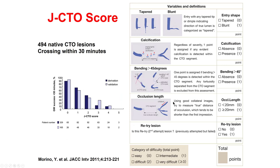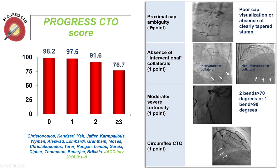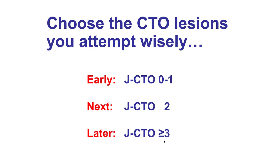Many scores have been developed that take anatomic characteristics into consideration and translate them into a predicted chance of CTO crossing within 30 minutes or overall success. The most commonly used is the JCTO (Japan CTO) score, which has five parameters: tapered proximal cap, calcium, bending more than 45 degrees inside the occlusion, more than 20 mm occlusion length, and previous failure to cross the CTO. Another score is the Progress CTO score, with four parameters: proximal cap ambiguity, lack of interventional collaterals, moderate or severe proximal tortuosity before the CTO, and CTO location in the circumflex. Ideally, when one starts performing CTO-PCI, it is best to start with simple occlusions (JCTO 0–1), then progress to JCTO 2, and leave the more complex ones (JCTO 3 or more) for later in the learning curve.